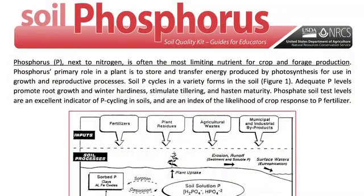We're going through a soil phosphorus test and we're going to go through some basics in the educator's guide with you to go over with your students. The very first section covers soil phosphorus and next to nitrogen it's the most limiting nutrient for forage and crop production.